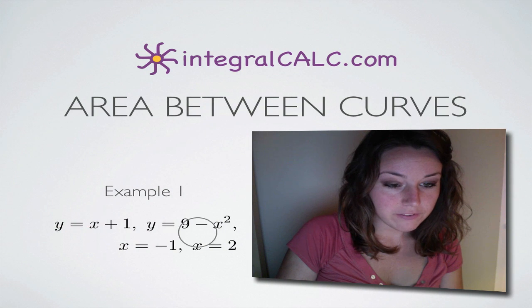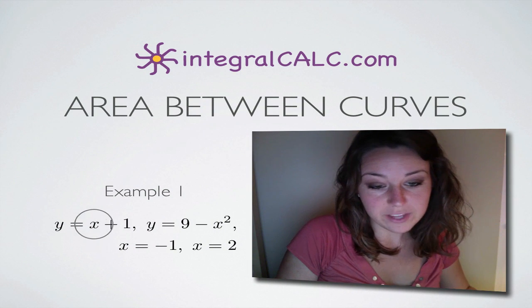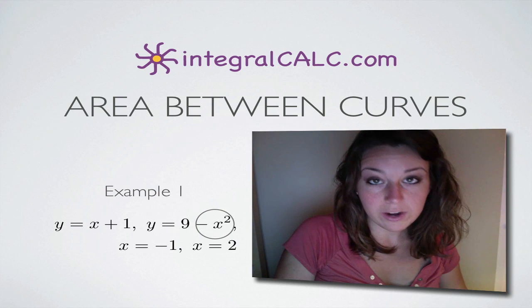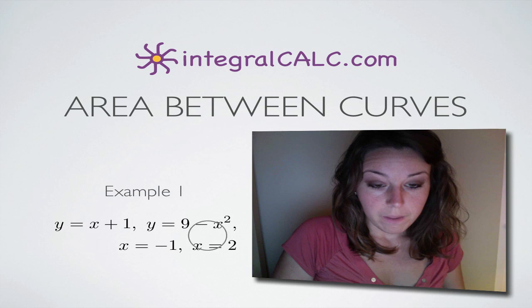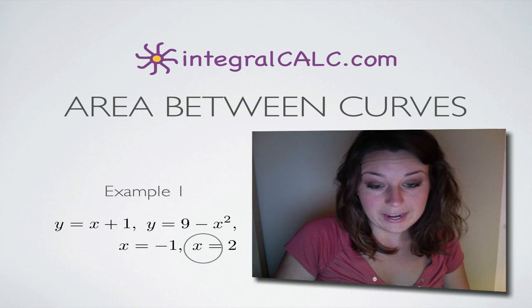The functions we're given are y equals x plus 1 and y equals 9 minus x squared. And we've been asked to find the area between the two of them between x equals negative 1 and x equals 2.